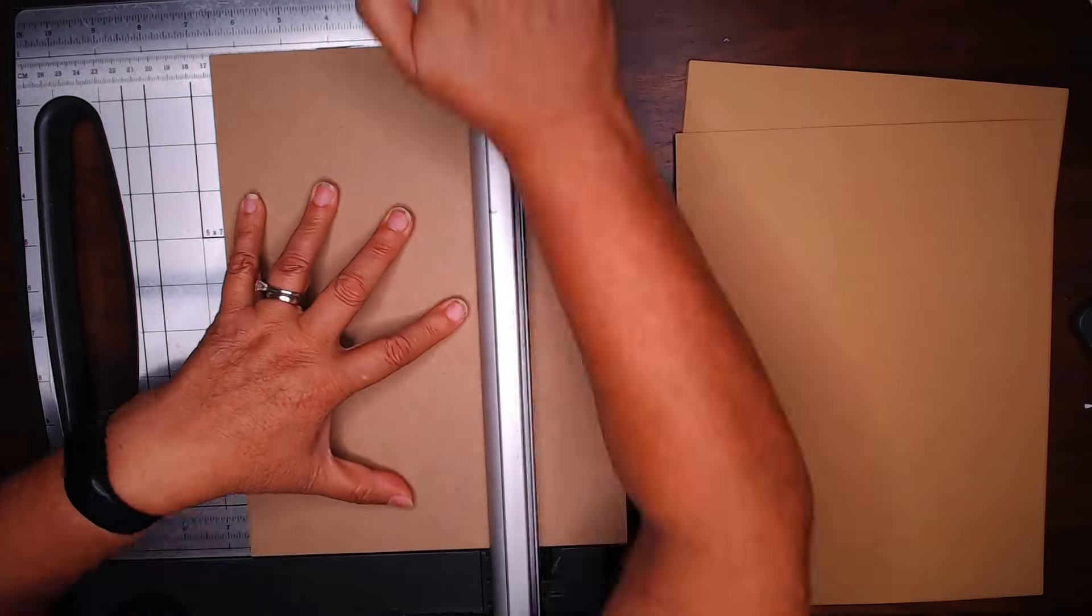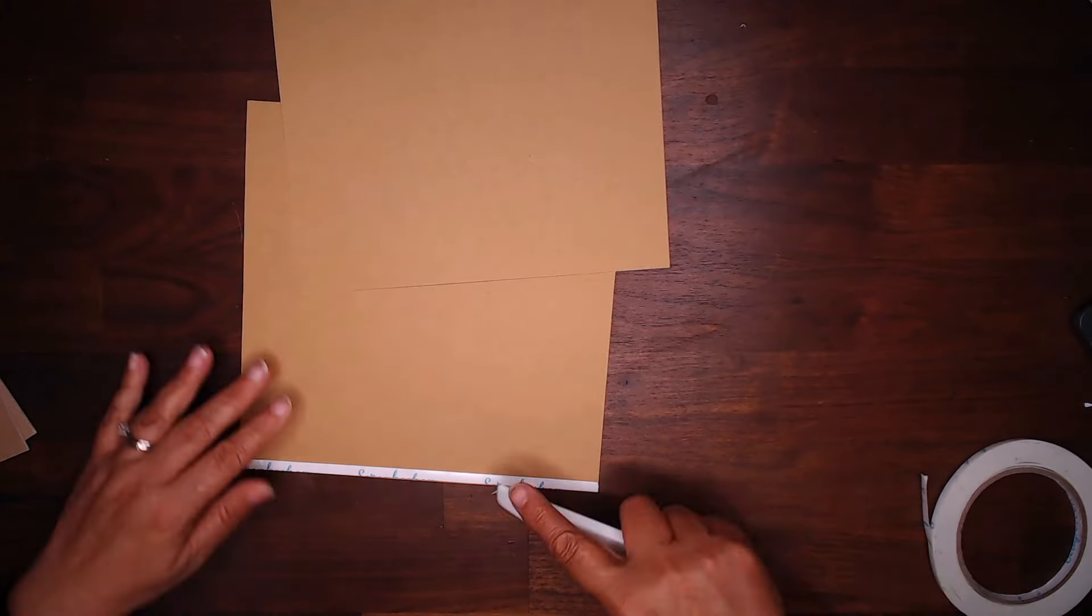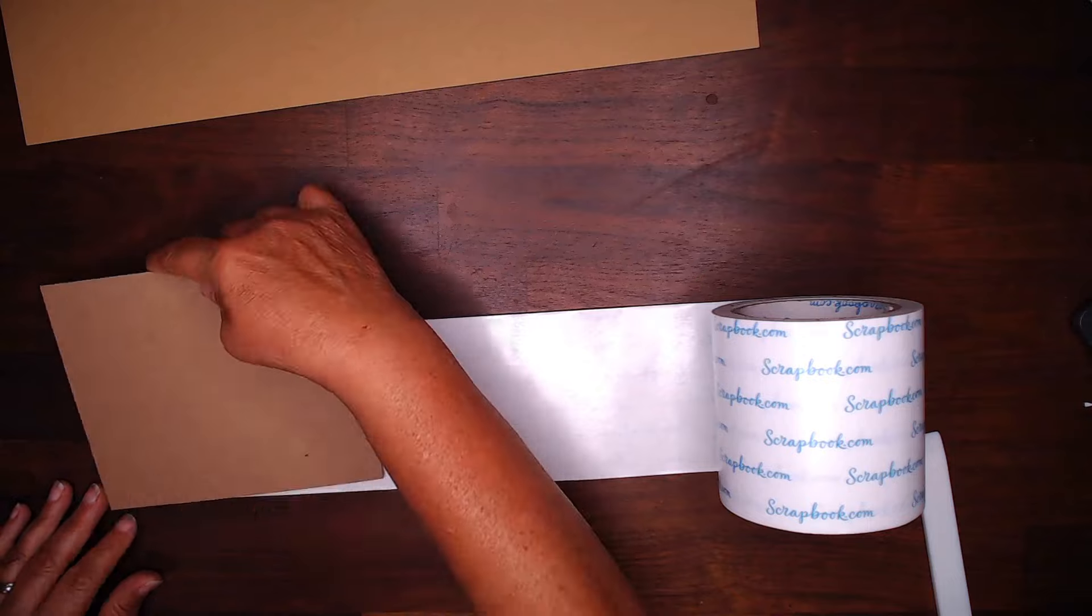I'm starting out with a piece of 8 1/2 by 11 chipboard that I cut down, two pieces of 6 1/2 by 5 1/2, and one piece that's 2 inches by 6 1/2. Again, the measurements will be in the other video.